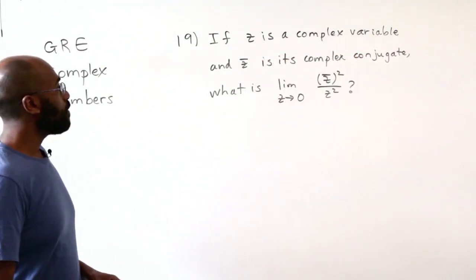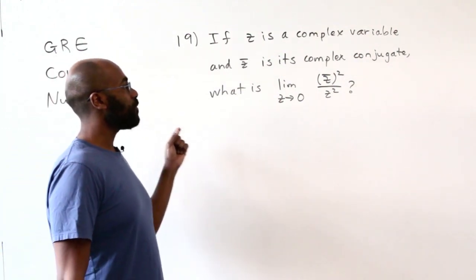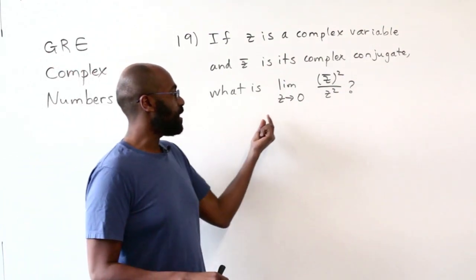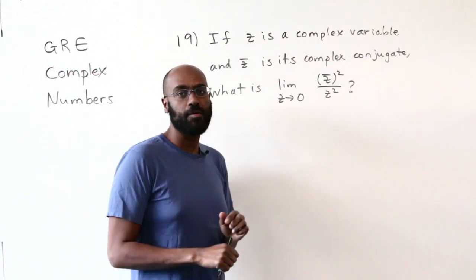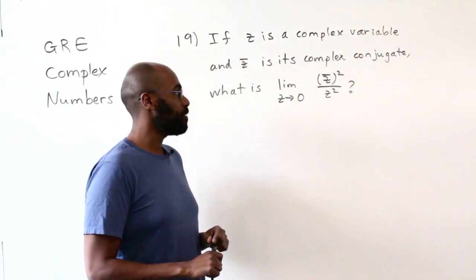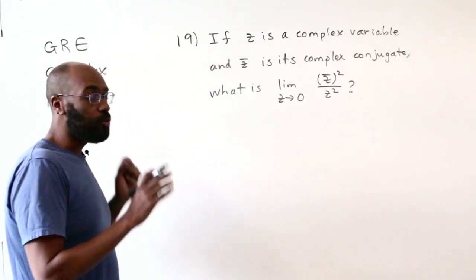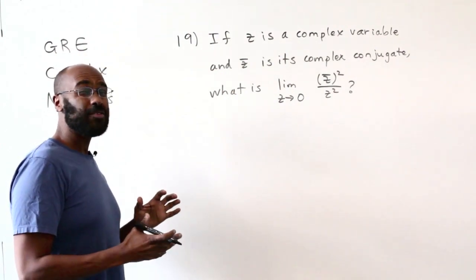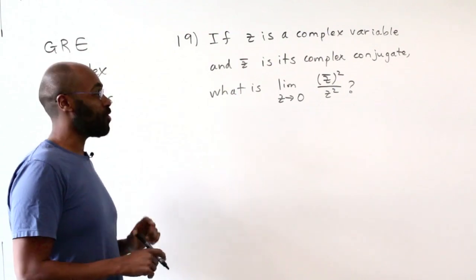The first problem I want to look at is number 19. It says if z is a complex number and z bar is its complex conjugate, what is the limit as z approaches zero of this quantity right here? The square of the complex conjugate divided by the square of the original complex number. Let's go about this in a brute force way at first, see what we come up with, and then think about a way that might make it easier or more manageable.